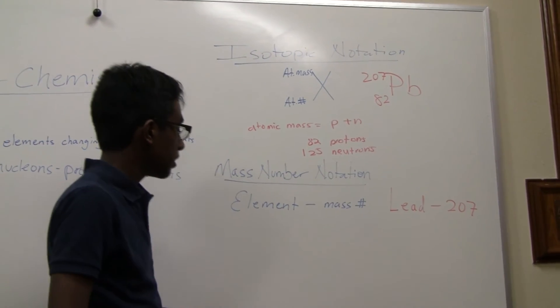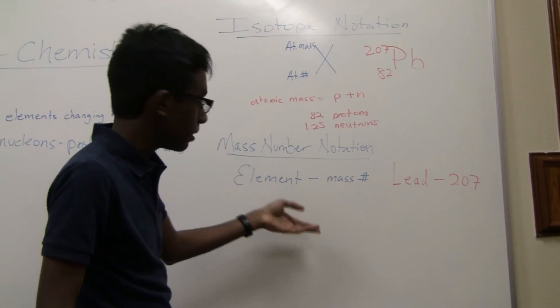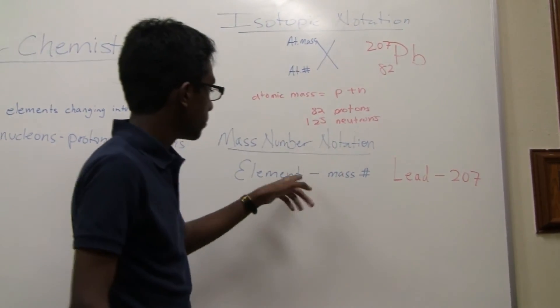The mass number notation, you just put the element. You write out the element. You put lead, and then you put the hyphen, and then you put the mass number.